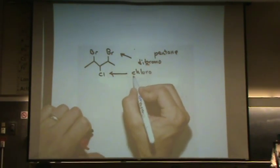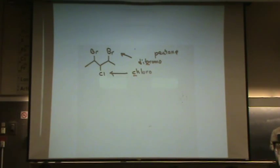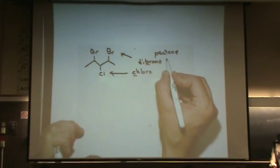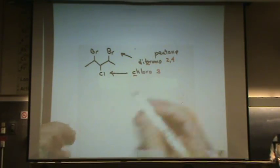So, B is going to come before C. You also will number them. So, the bromo is on the two and the four position, and the chloro is going to be on the third position.